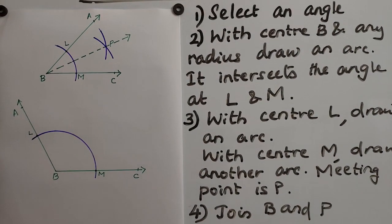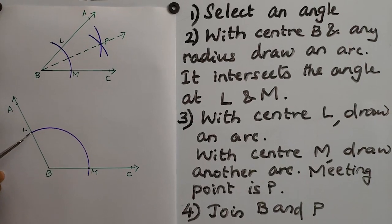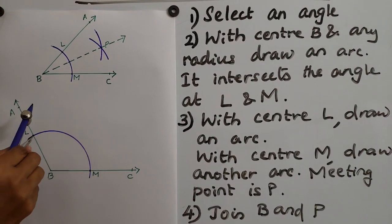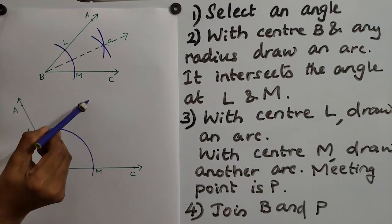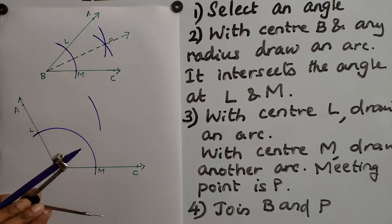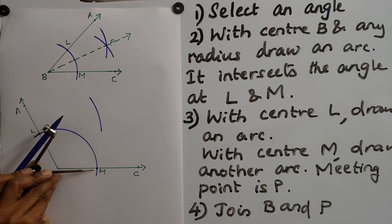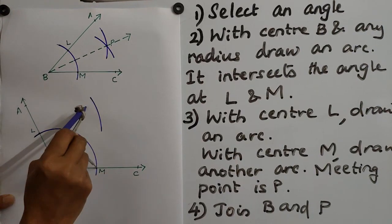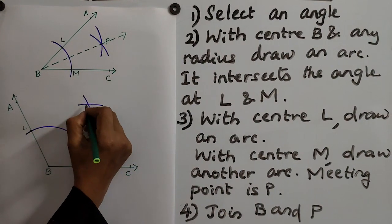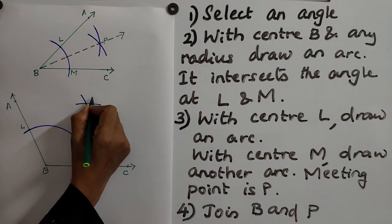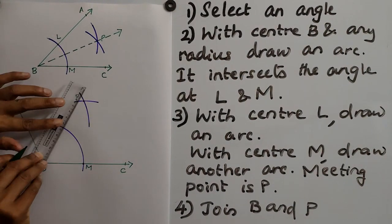Third step: with center L, place the metal tip on L. If you need, you can extend the compass. Draw an arc. After drawing the first arc, don't change the compass — place the metal tip on M and draw one more arc. They will intersect at point P. Join P and B.